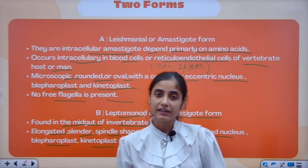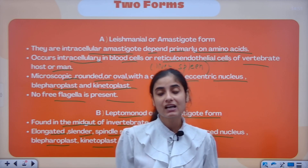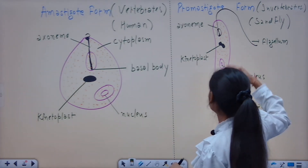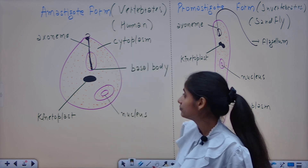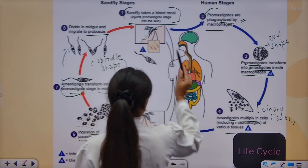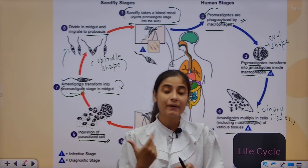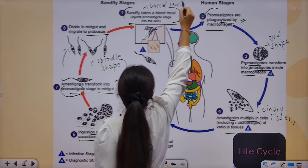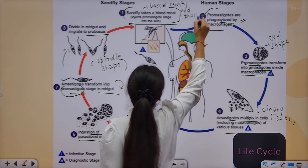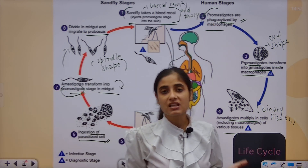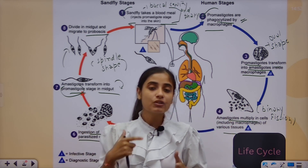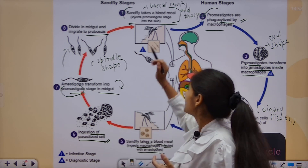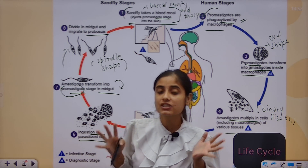The symptoms are high fever and dark pigmentation. The disease is called Kala Azar, Dum Dum Fever, and Black Fever. We have studied two forms: the Promastigote form which is cylindrical with free flagella, and the oval-shaped Amastigote form in the human host. Comparing with Plasmodium and Trypanosoma, in those cases infection was through the salivary gland — the sporozoite stage was injected through the salivary gland.